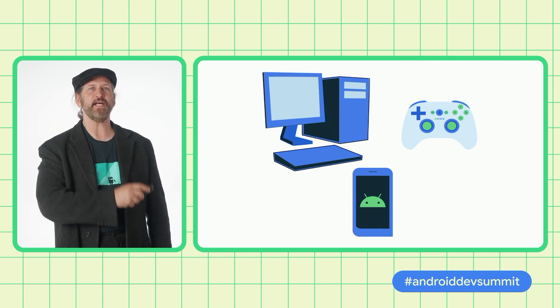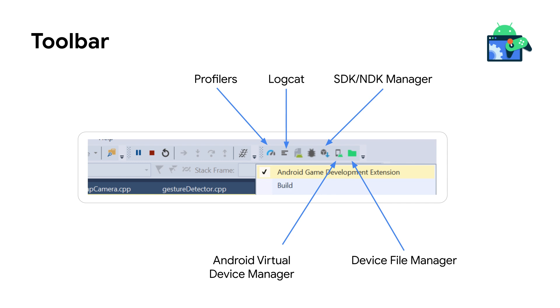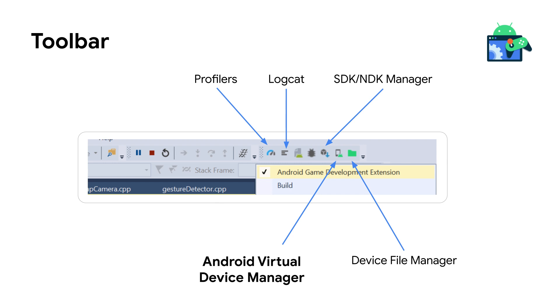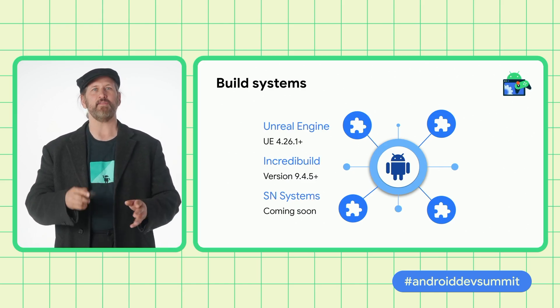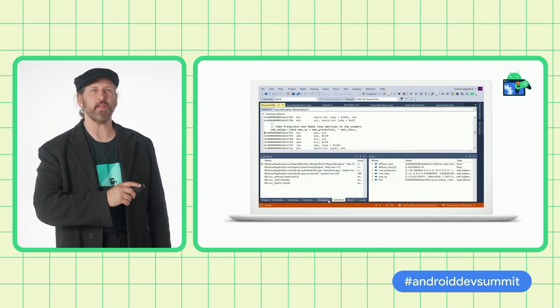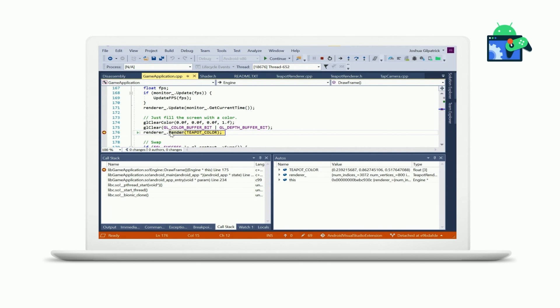So you can work with your desktop, console, and Android targets without having to move to a different toolset and build system. And it's easy to configure. After installing the extension, head over to your Visual Studio project and add the Android APK template. A toolbar will provide quick access to critical Android tools, such as the SDK and NDK manager, the virtual device manager for the emulator, the device file manager, logcat, and profilers. AGDE integrates with multiple build systems and your Unreal Engine workflow, effectively allowing you to use the same tools to build and debug for desktop, console, and Android. Once the project is set up with an Android target, Android development works like any other Visual Studio target platform.